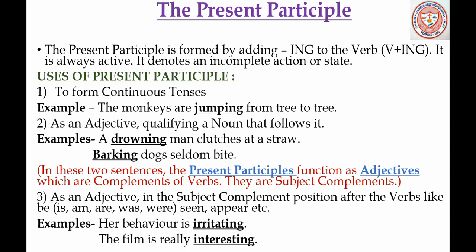As an adjective qualifying a noun that follows it. Examples: 'A drowning man clutches at a straw' — the word 'drowning' is an adjective because it qualifies the noun 'man.' 'Barking dogs seldom bite' — 'barking' is an adjective which qualifies the noun 'dogs.' So 'drowning' and 'barking' are present participles functioning as adjectives.